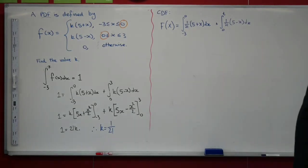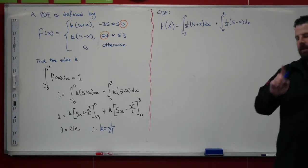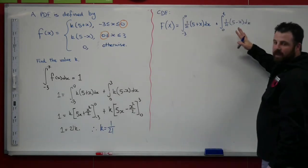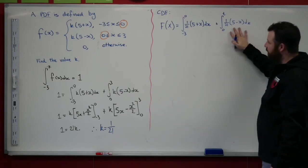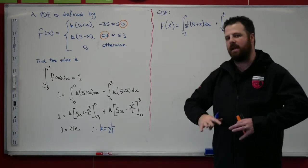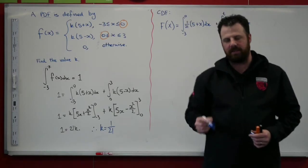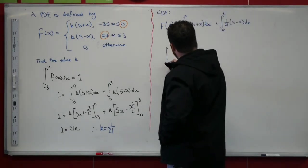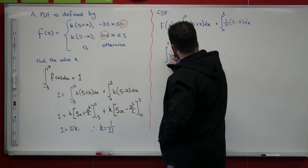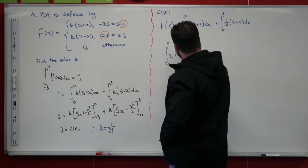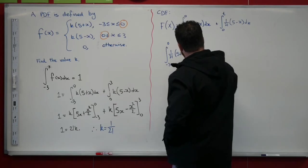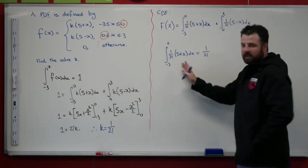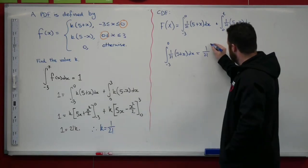Of 1/21(5 - x) dx with respect to x. So let's go through and evaluate that. I'm going to evaluate them one at a time. I'm going to evaluate this one first, then I'm going to evaluate this one, and we're going to come back at the end and put them all together to get our CDF.